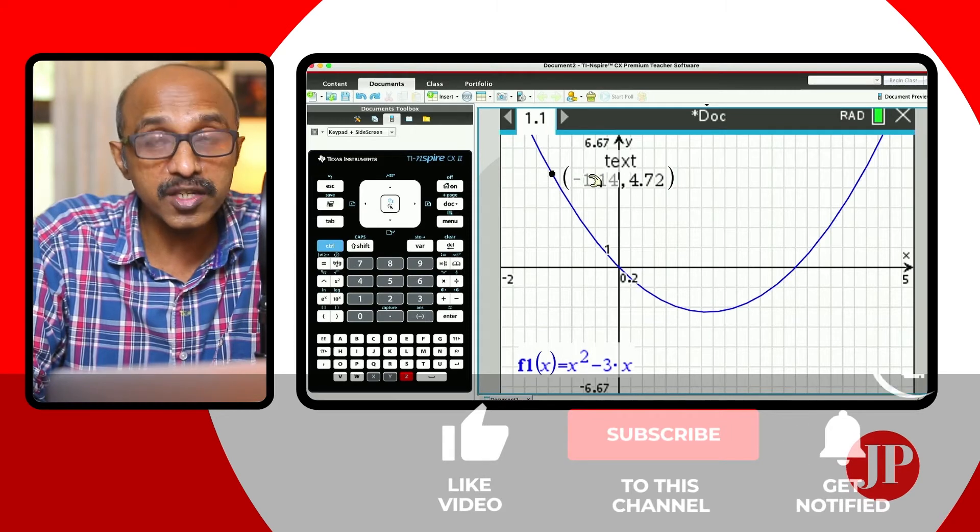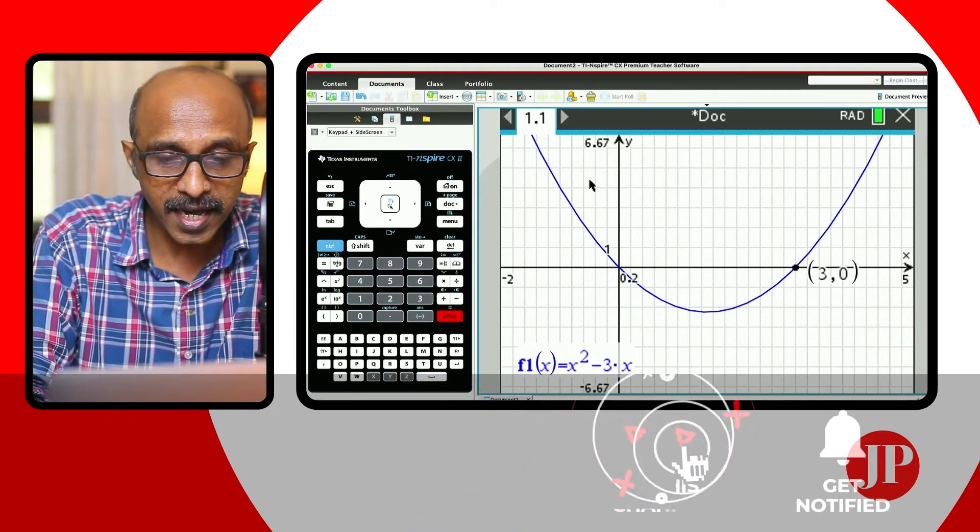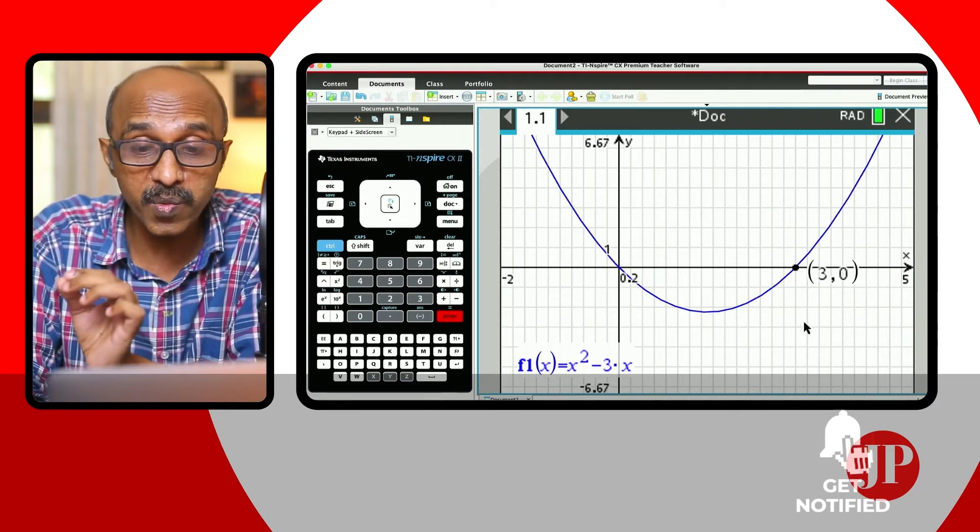So now when I change the x coordinate to what I want, I want x is equal to 3. So I just change that and I hit enter and the point just jumps to where we want it to be.